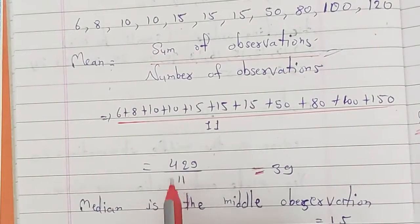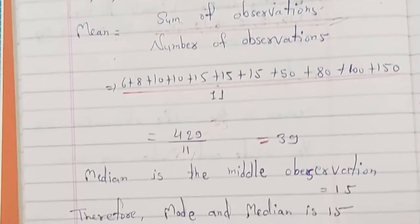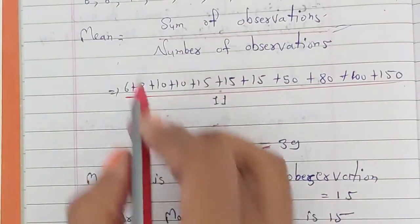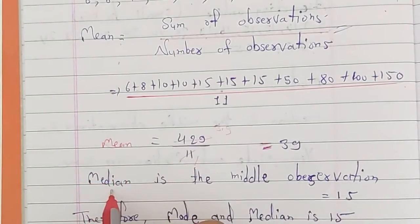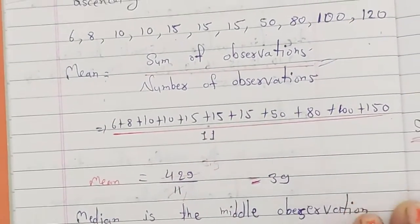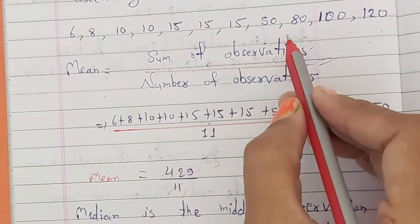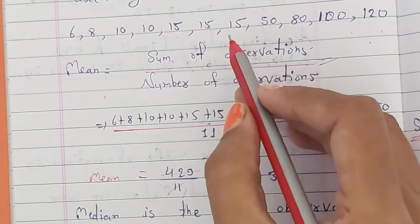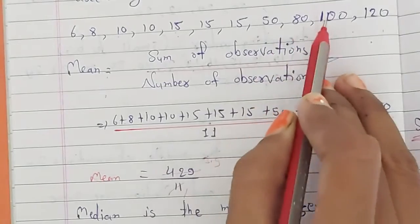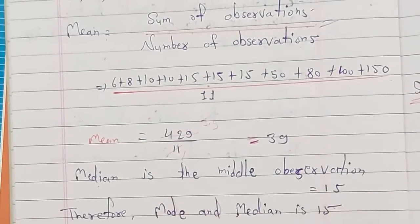We can verify: 11 × 39 = 429. Mean is 39. Now for median — median is the middle observation. Total digits are 11, so skip 5 from this side and 5 from the other side. The middle value is 15. So median is 15.